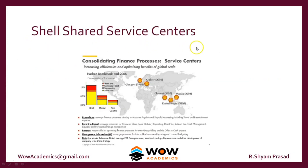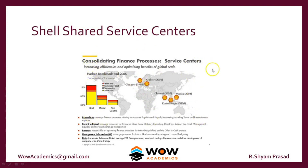Shell company is an example of a shared service center. Shell operates throughout the world and has created offshoring activities — they have offshored activities such as expenditure, record to report, revenue, management information, and data to locations like Glasgow, Kharkov, Chennai, Kuala Lumpur, and Manila. However, these are not third party companies — they are also owned by Shell. So Shell, an oil exploiting company, also has these shared services centers where the entire global network of Shell companies have outsourced their financial activities to these centers.